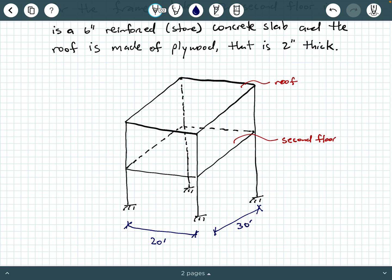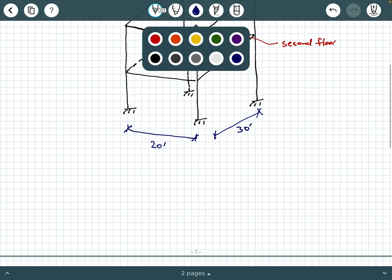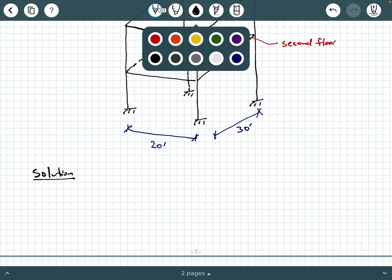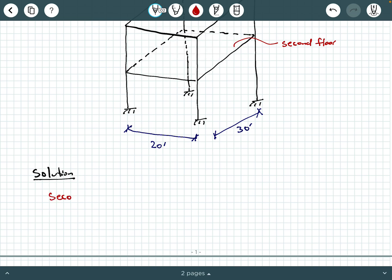Let's look at each of these floors separately. The second floor first. Let's start with that. So we're going to write solution, and let's look at that second floor. We are told to use ASCE 7-16 table C.3.1-2.